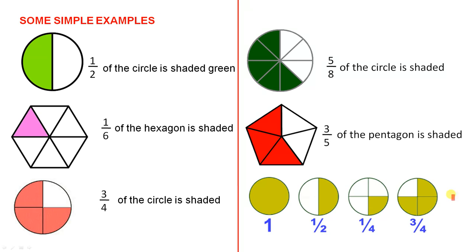Some simple examples. Here we have a circle and half of the circle is shaded green, so the entire circle is divided into two equal parts, but one part is shaded green. One sixth of the hexagon is shaded, one part out of a total of six. Three quarters of the circle is shaded, one, two, three, so three parts are shaded out of a total of four.